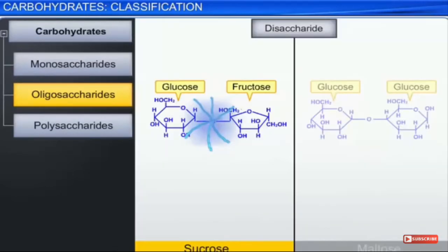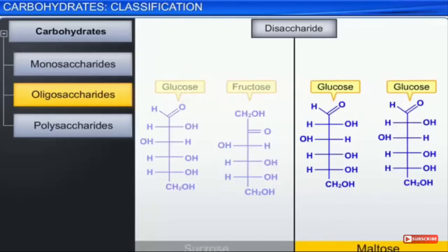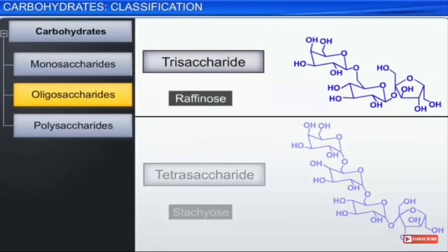For example, sucrose is made up of glucose and fructose connected together. When hydrolysis takes place, we get one part glucose and one part fructose. Similarly, maltose is made up of two units of glucose. So hydrolysis of disaccharides ultimately yields monosaccharides, which cannot be further hydrolyzed.